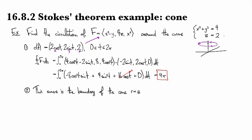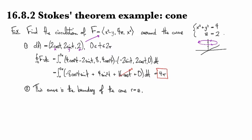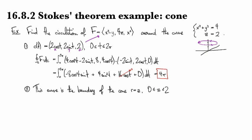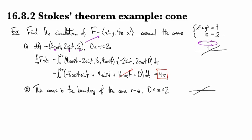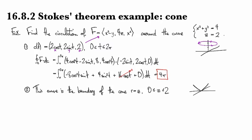and we're going to use the cone, the cone R equals Z, and this is for Z between zero and two.